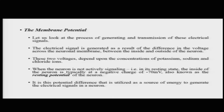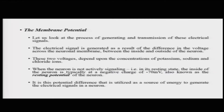How is this signal generated? What is this whole concept of electrical and chemical signal being generated? The first concept to discuss here is the membrane potential. An electrical signal is generated as a result of the difference in the voltage across the neuronal membrane. There is a voltage difference across this body and also between the inside and the outside of the neuron.